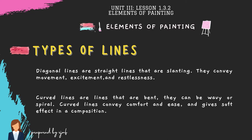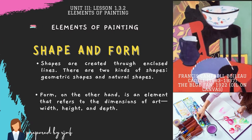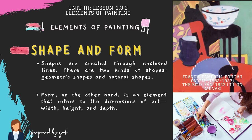We also have shape and form. Shapes are created through enclosed lines and come in two kinds: geometric shapes and natural shapes. Geometric, or inorganic, shapes have uniform measurements and do not often appear in nature — examples include circles, triangles, and squares. Natural, or organic, shapes are associated with nature, like plants and animals. Form refers to the dimensions of art: width, height, and depth. Observe the painting by Francis Campbell Boileau-Caudel entitled The Blue Fan, 1922, oil on canvas.